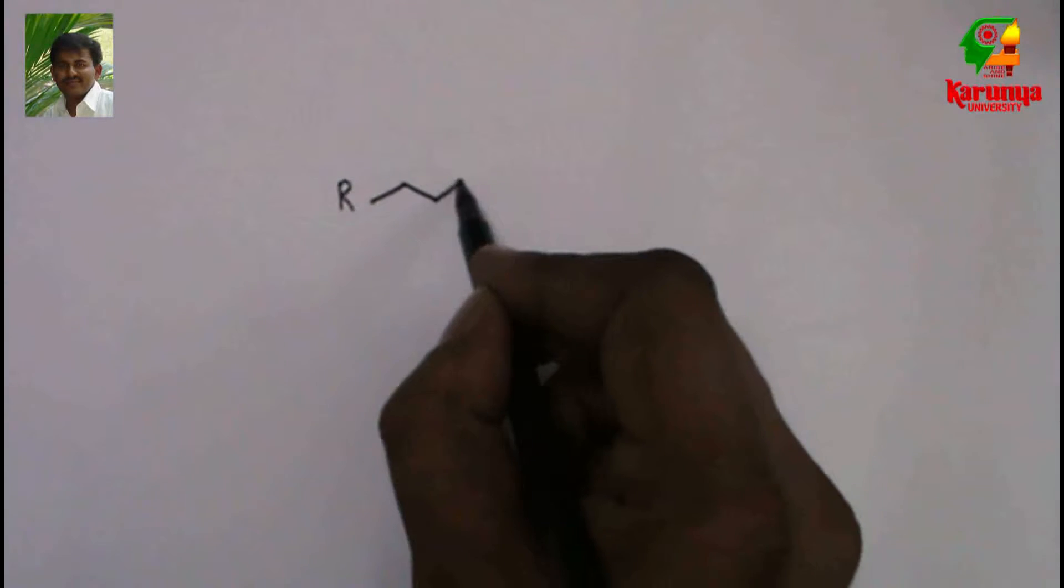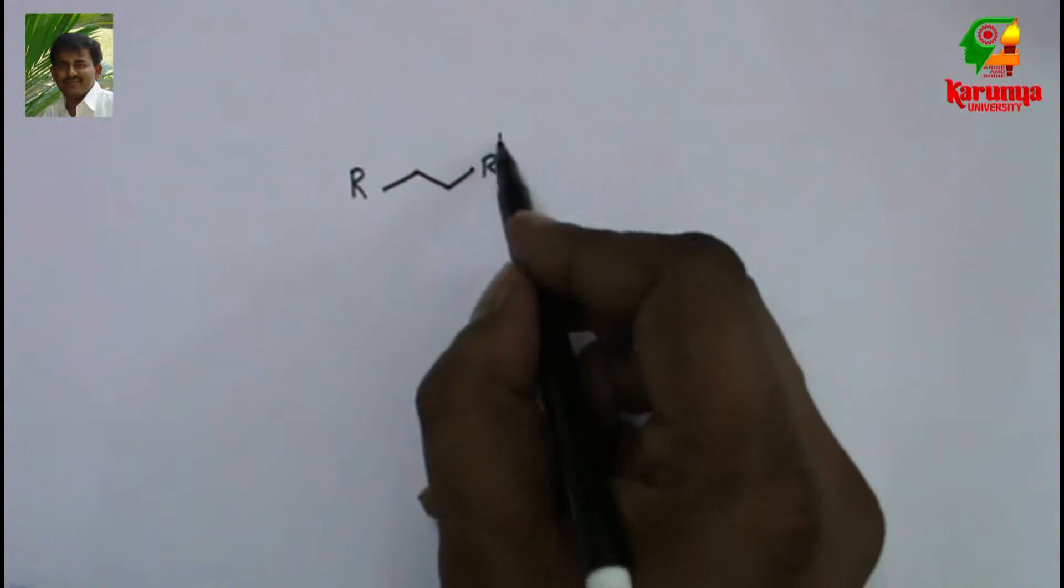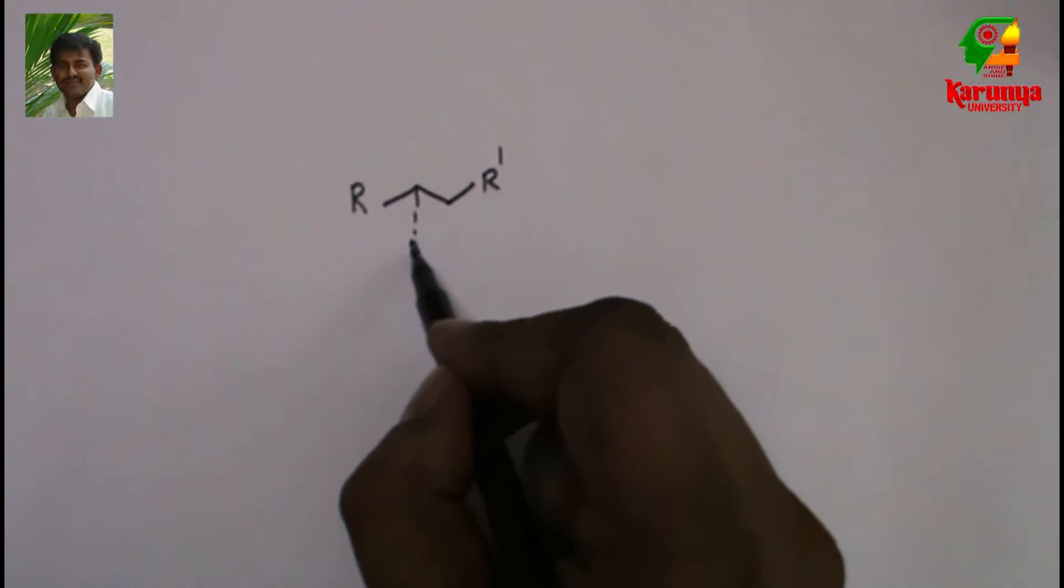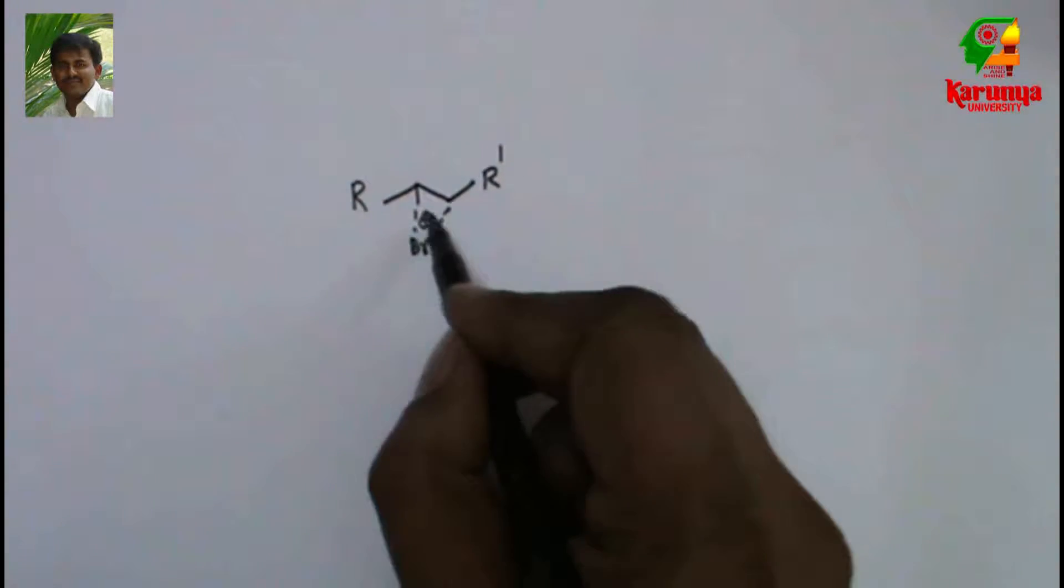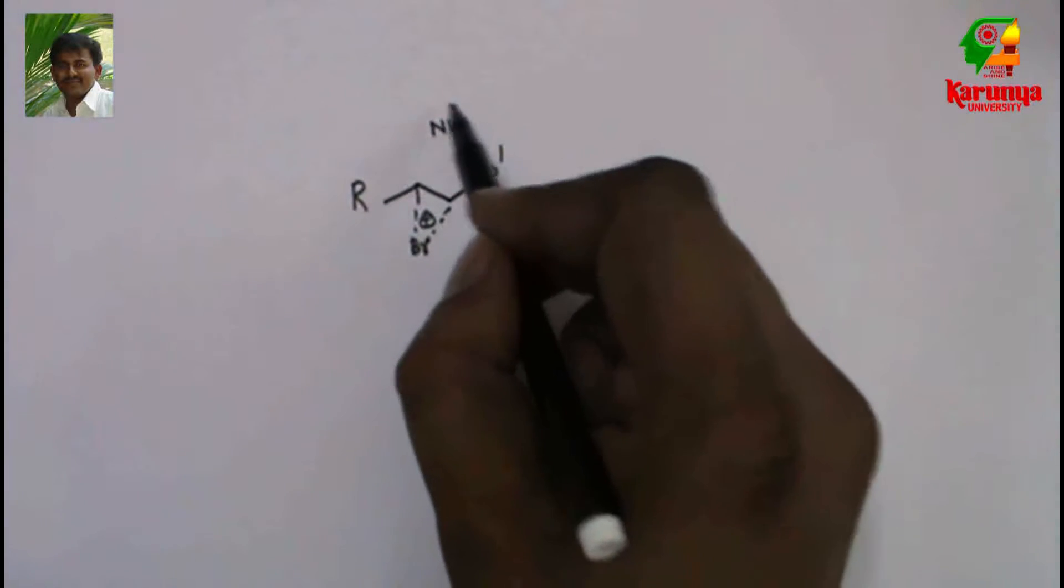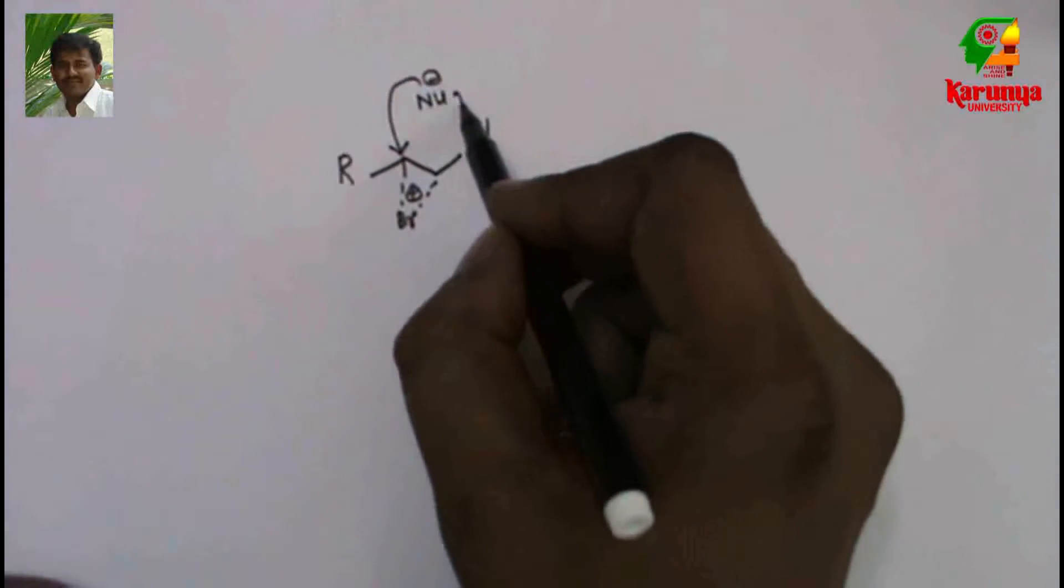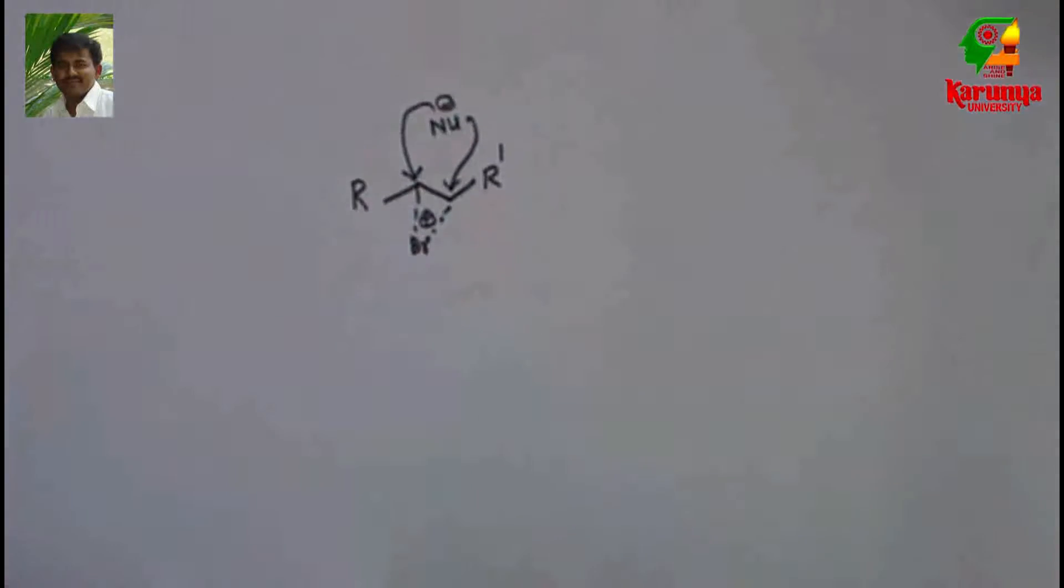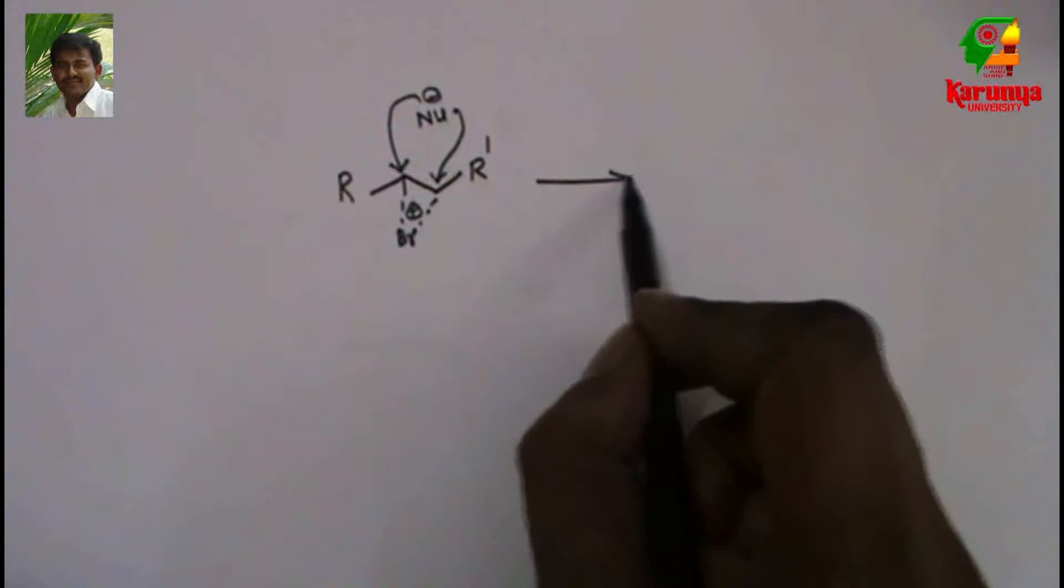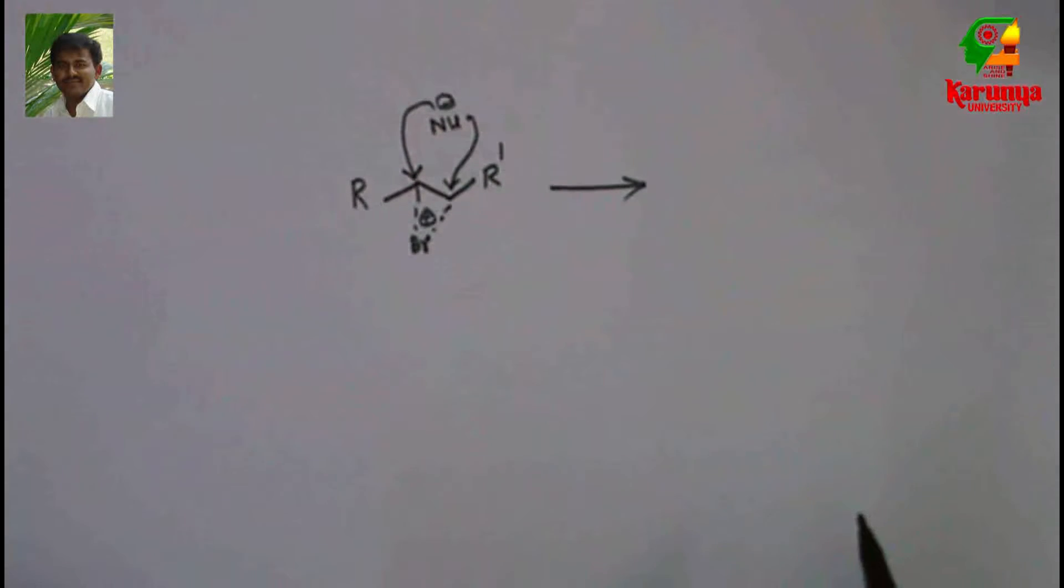Now the question is the regioselectivity in bromonium ion opening. When the two alkyl chains are different, the nucleophile can open at this carbon to give one product, or this carbon to give another product.